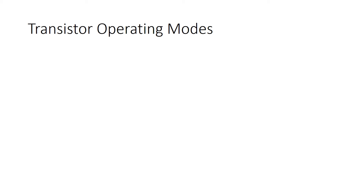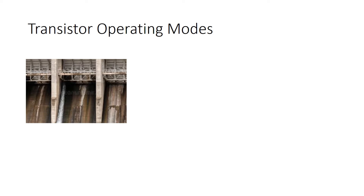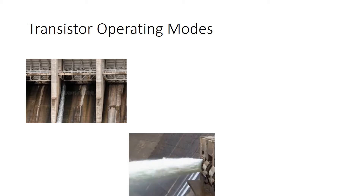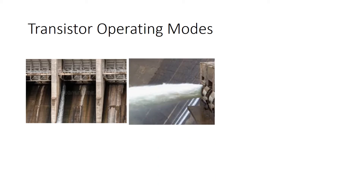Let's understand the transistor operating modes in a very simple way. I have given an example of a dam. The first mode is where the dam is closed and no water is flowing. The second mode is where we have opened one of the gates and the other two are closed, so we can control the flow of water.